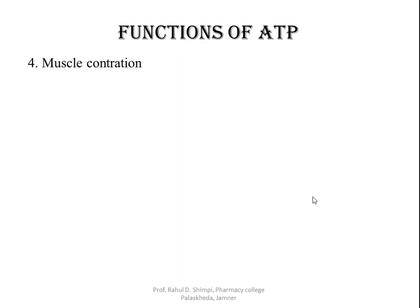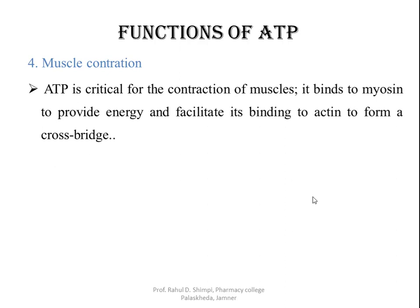The next important function in which ATPs are involved is muscle contraction. ATP provides the energy to the muscles by which contraction can take place. ATP is critical for the contraction of muscle. It binds with myosin, which is one of the protein filaments present in the muscles, to provide energy. Due to the activation of myosin, the actin and myosin filaments of the muscles slide over each other to produce muscular contraction.